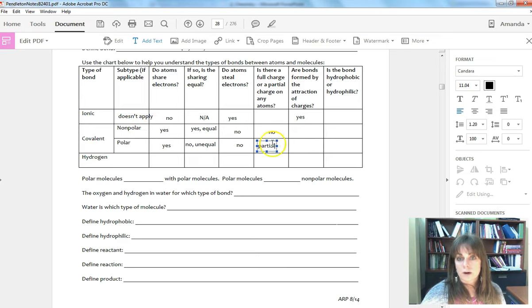Now, this is where sometimes students get a little bit confused, so I want to try and be clear. Nonpolar covalent, there's no charge. There's no attraction of charges. It's simply that they're sharing electrons. So bonds are not formed by the attraction of charges.